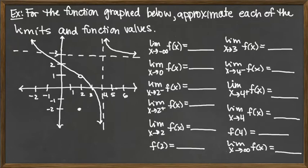Looking at the first one: the limit as x goes to negative infinity. As we go to negative infinity, we're talking about the left-hand arrow. We see that as x goes off to negative infinity, the function value is going up without bound. So the function is going to positive infinity — our answer there is positive infinity.